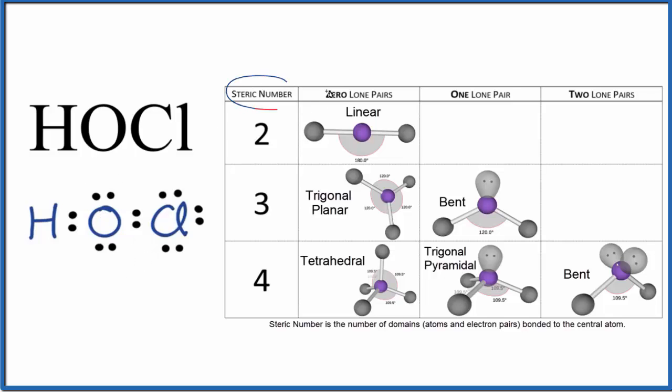And we want to look at the steric number. That's the number of things that are attached to that central atom, that oxygen. So we have two atoms, and then we have two lone pairs. So our steric number is four.